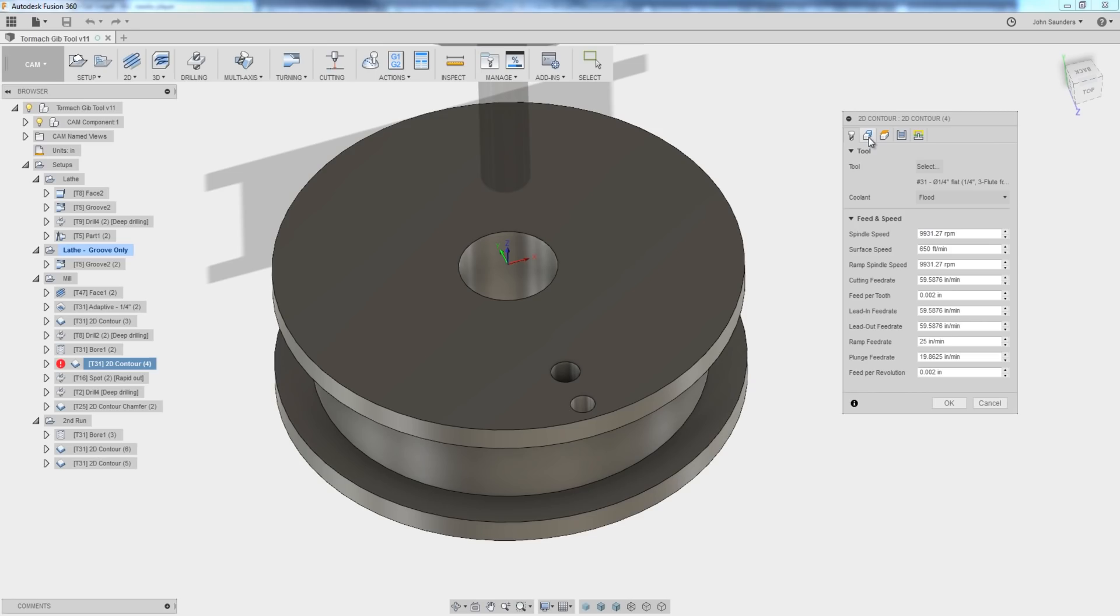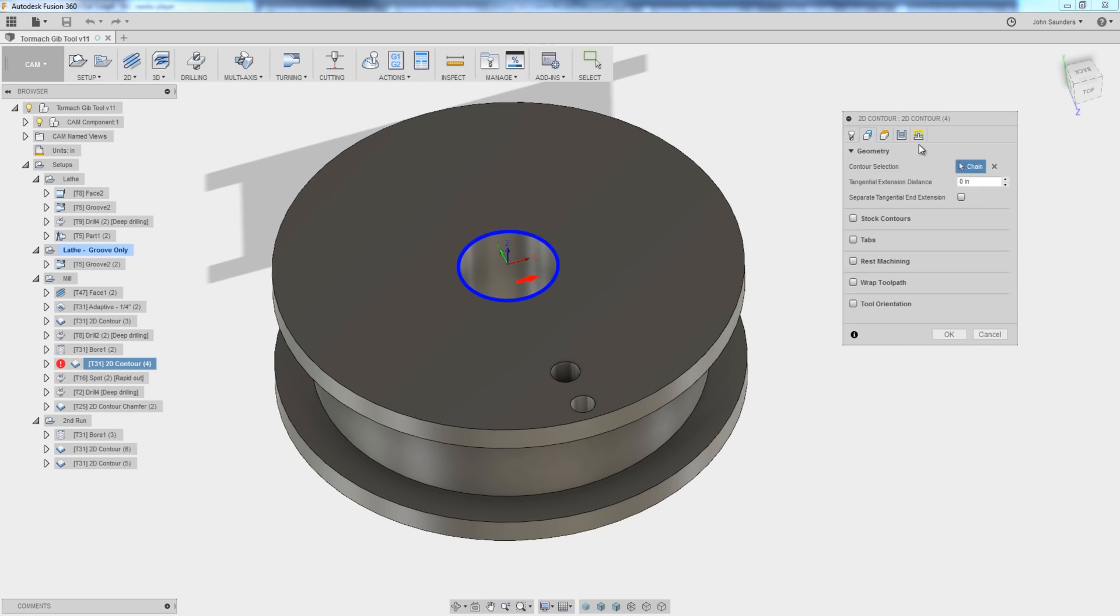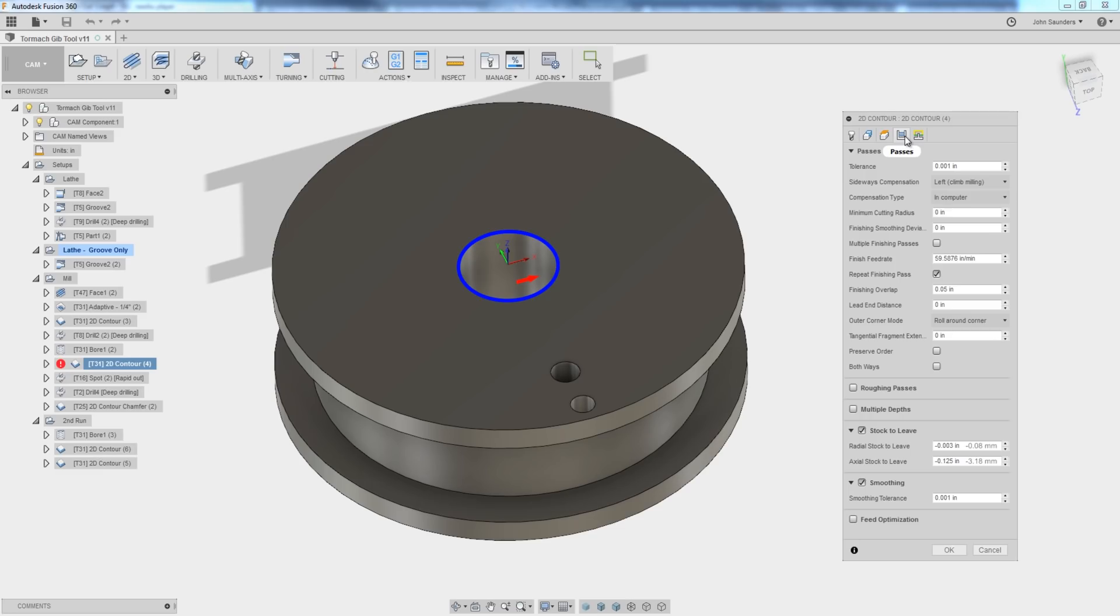The other really good trick when you're going to press a pin in is we're going to use 2D contour. Under geometry, I picked the top edge, but under passes, I dropped it down 1/8 of an inch and we're leaving negative radial stock to leave.